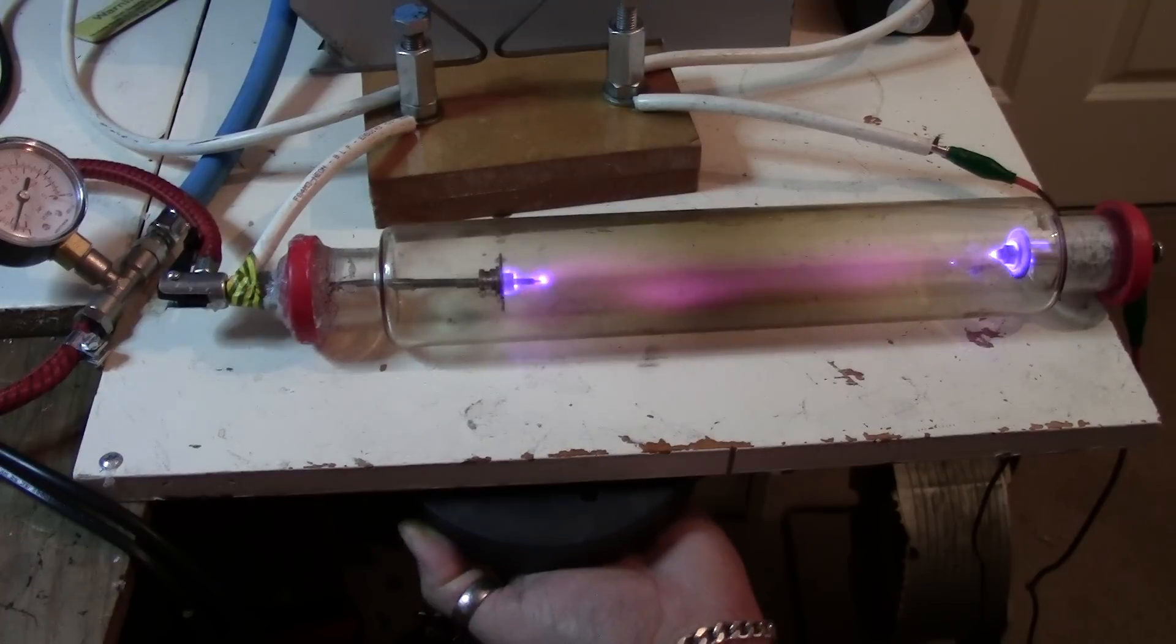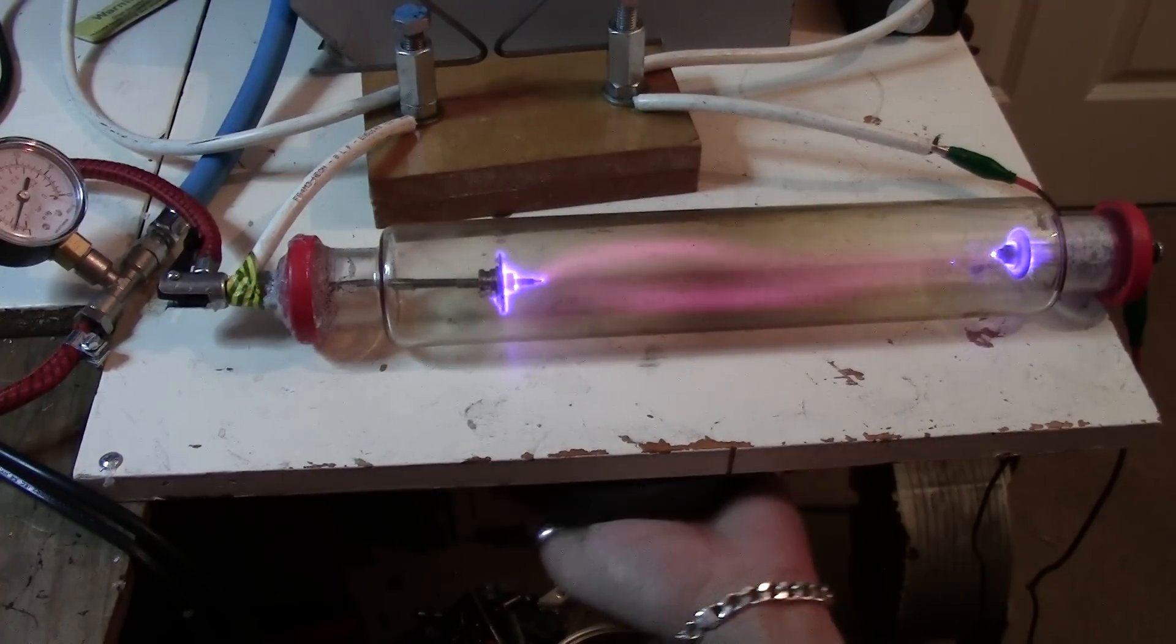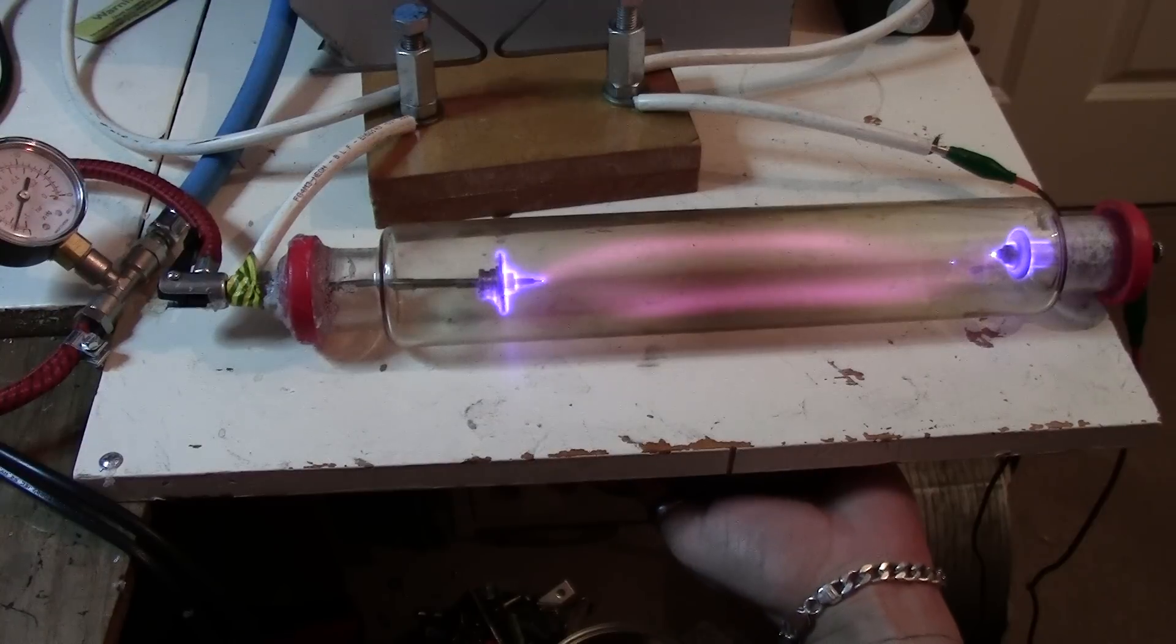There you go, and this is how I can manipulate the arc. If you can see that I can actually get a double stream.